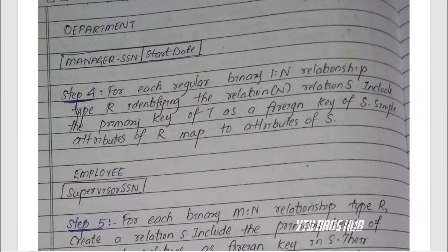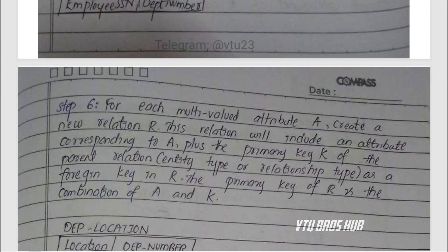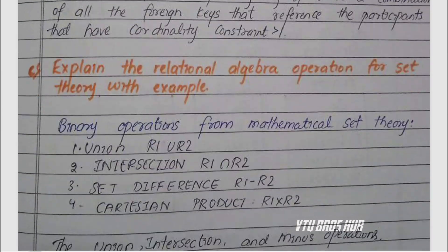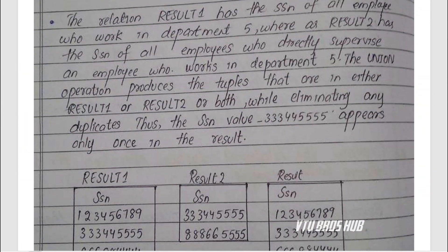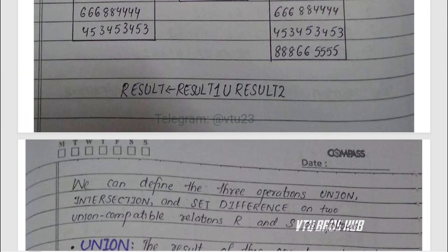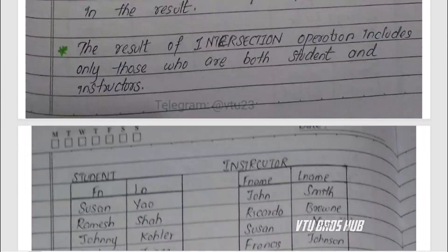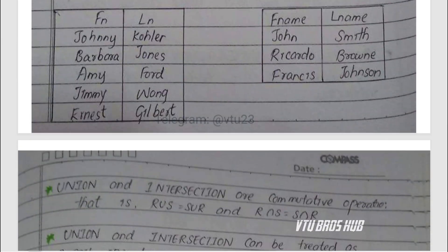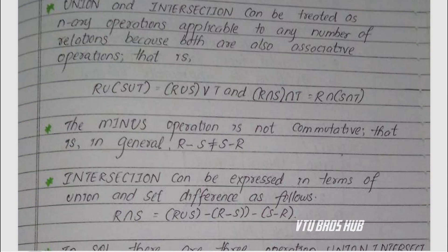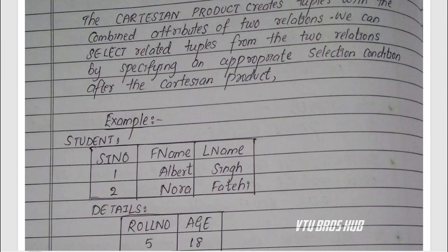Module 2: relational model and algebra. Understand schema, keys, and constraints. Practice relational algebra operations like selection, projection, join, and aggregation. Don't miss ER-to-relational mapping — it's important for design questions.